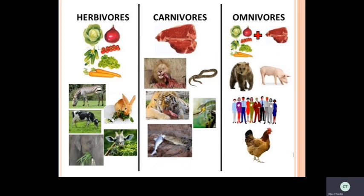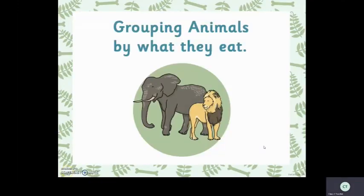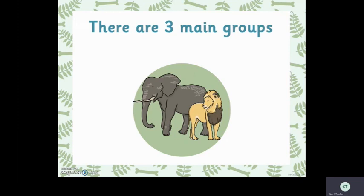Now let us watch an audio-visual and discuss more about herbivores, carnivores, and omnivores. Today's topic is: according to their food habits, animals are divided into three types. Let us watch the video and see what animals come under herbivores, carnivores, and omnivores.